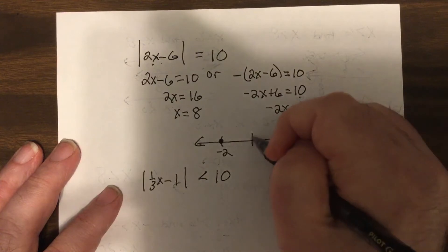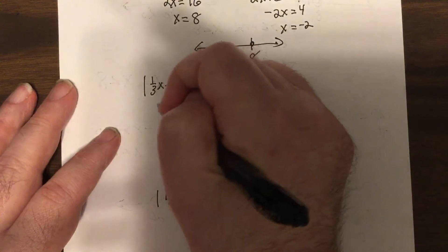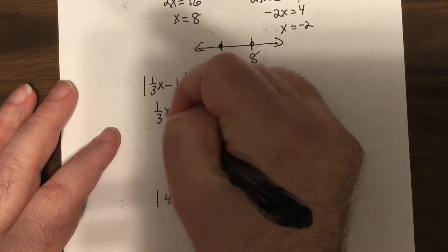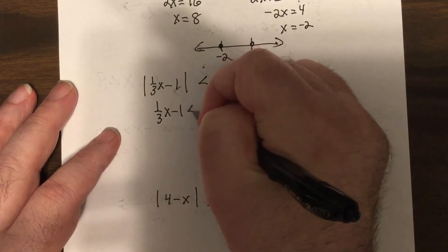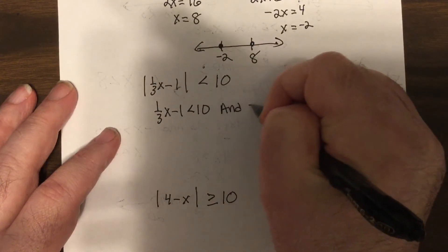So this one you go: one-third x minus 1 is less than 10, and the opposite.